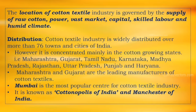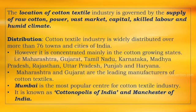Distribution. Cotton textile industry is widely distributed over more than 76 towns and cities of India. However, it is concentrated mainly in the cotton growing areas, that is Maharashtra, Gujarat, Tamil Nadu, Karnataka, Madhya Pradesh, Rajasthan, Uttar Pradesh, Punjab, and Haryana. Among them, Maharashtra and Gujarat are the leading manufacturers of cotton textiles. Mumbai is the most popular center for cotton textile industry.